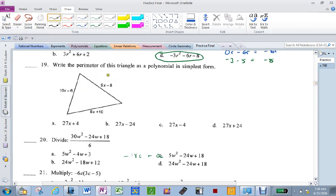Add these up to do the perimeter. 10x, 9x, 8x, 27x. 10 minus 8 minus 6, negative 4. 27x minus 4.